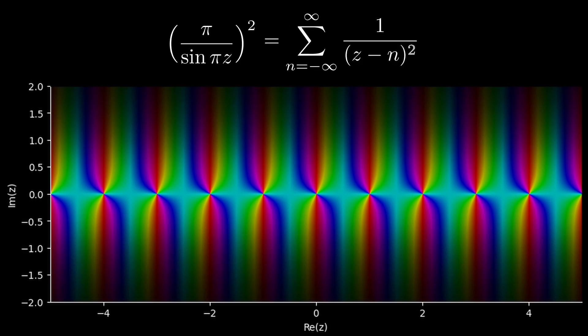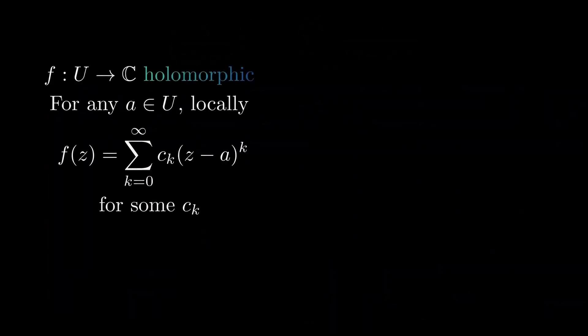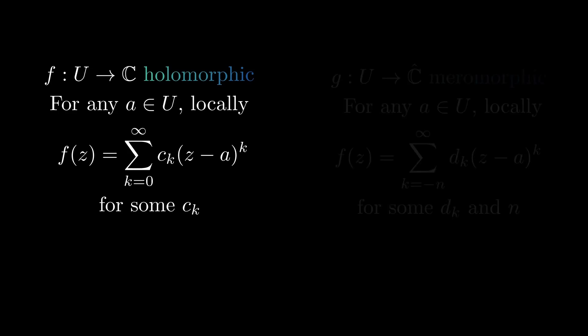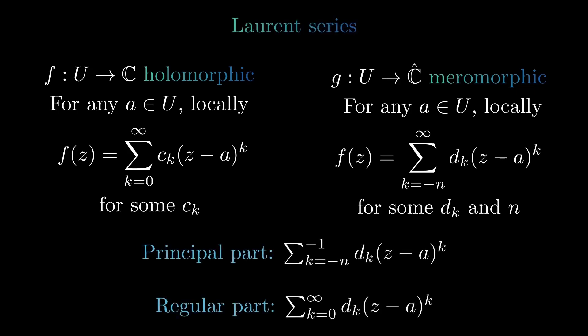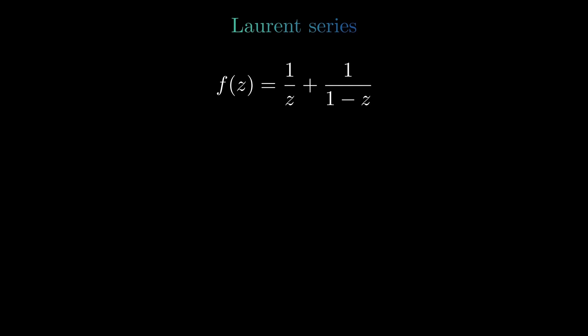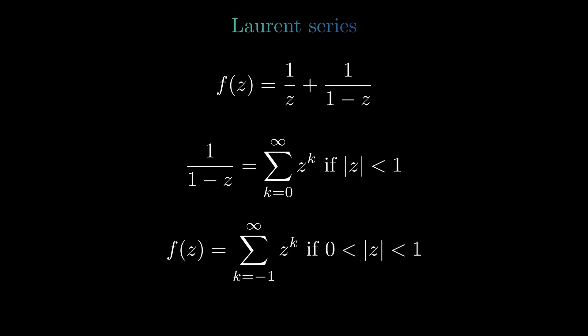How do we define the principal parts of a meromorphic function? For holomorphic functions, we can always find a local representation as a power series. For meromorphic functions, the same is true when we add terms with negative exponents at a pole. This is known as the Laurent series. The part with negative exponents is called the principal part, and the other part the regular part. For example, a given meromorphic function with a pole at zero can have its second term developed into a geometric series, giving us the Laurent series at zero.